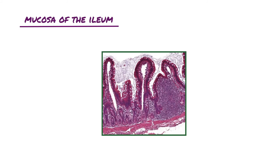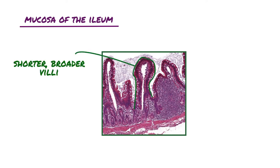Looking at a section taken from the ileum, it has the same characteristics as the duodenum and jejunum. But the mucosa of the ileum can be differentiated by its shorter, broader villi. Additionally, the lamina propria of the ileum houses permanent clusters of lymphoid nodules known as Peyer's patches, which are only seen in the ileum.